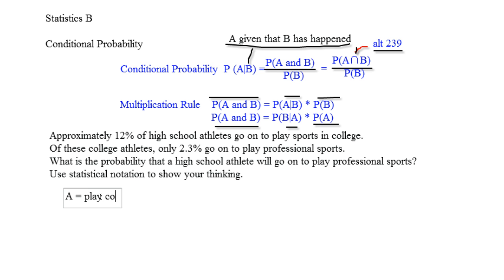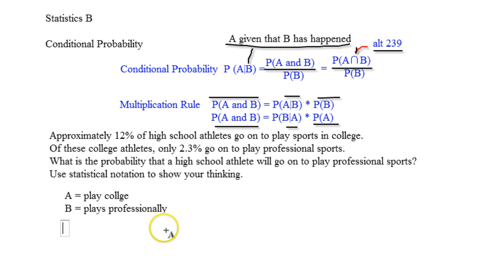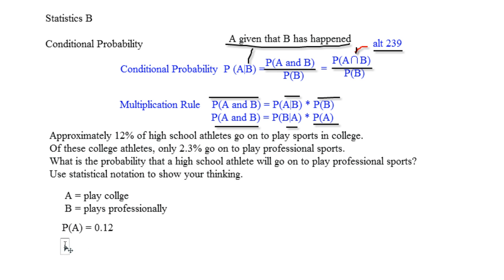First off, you have to designate which one is which. So A is plays in college, and B is going to be plays professionally. We know that the probability of A is going to be 0.12. Now here's the tricky part: the probability of B given A is given to us, because we know that they've already been in college. Of these college athletes, 2.3% go on — so that's going to be that part right there.